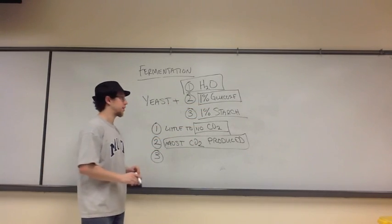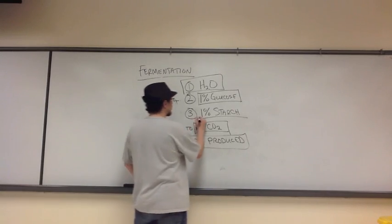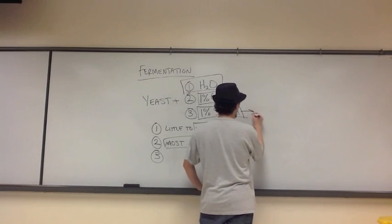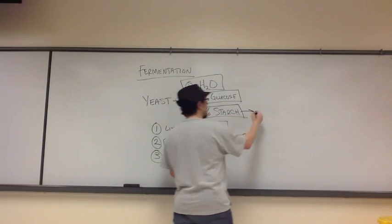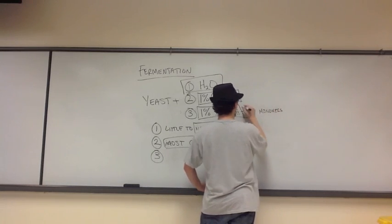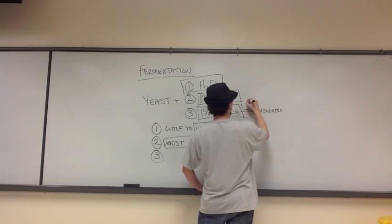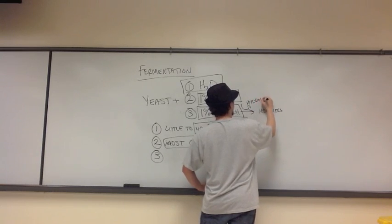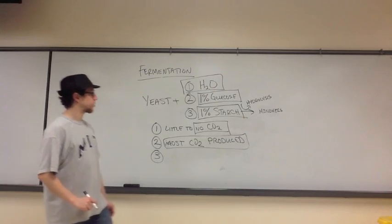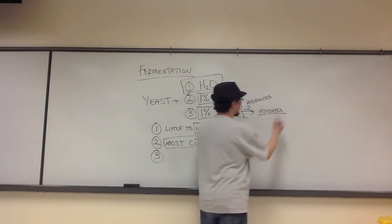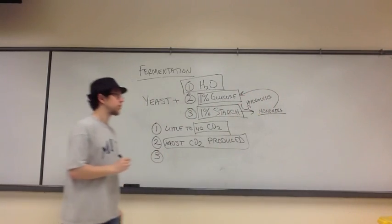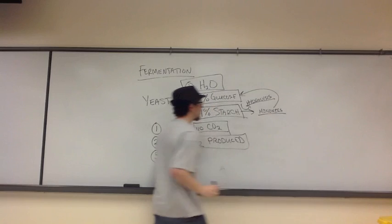With starch, we can eventually hydrolyze this molecule into monomers. We're going to basically perform a series of hydrolysis reactions. After we perform those hydrolysis reactions, we can actually produce the monomers, which will be glucose molecules. But hydrolysis takes time.